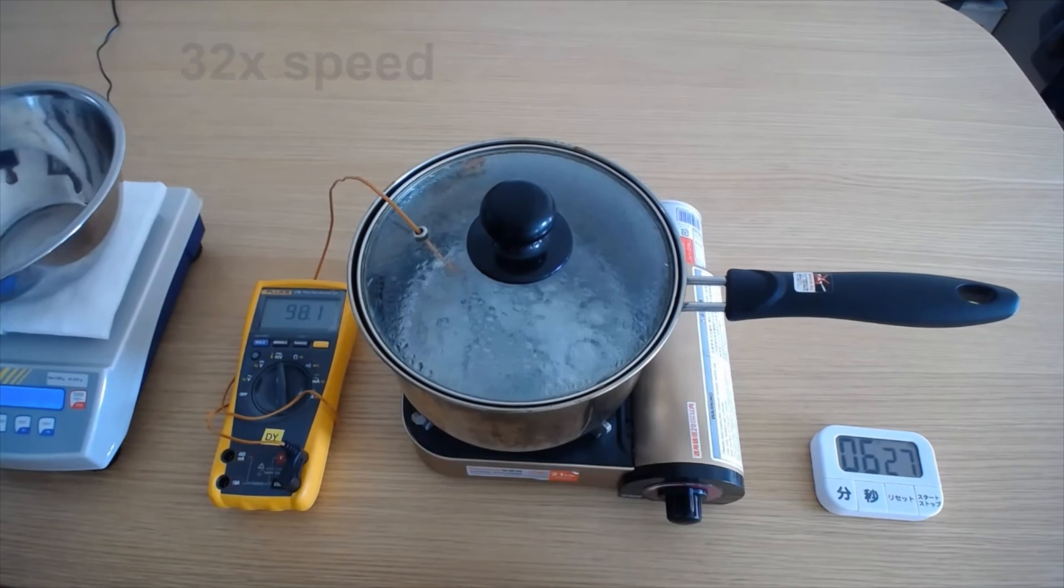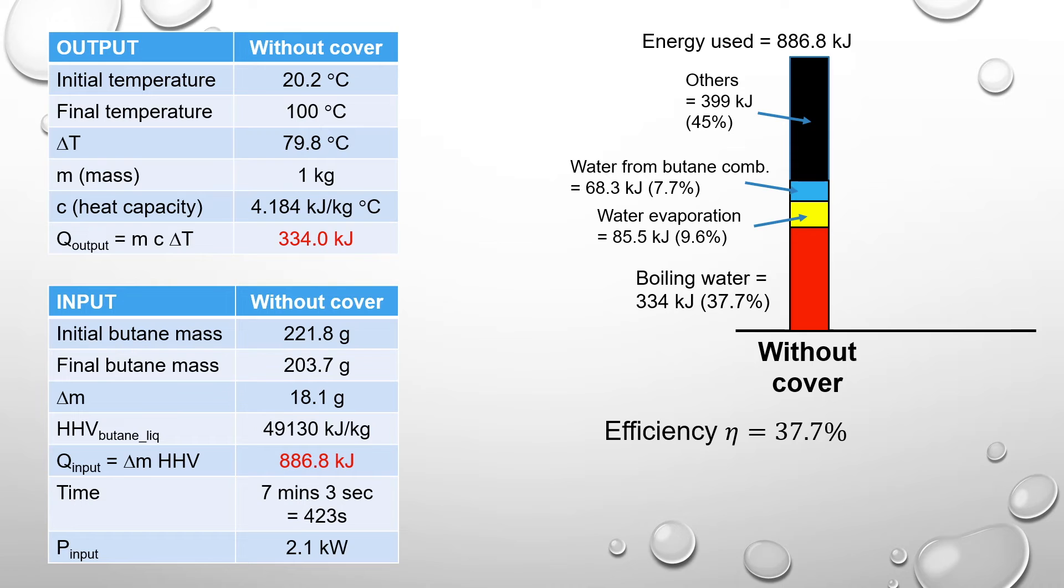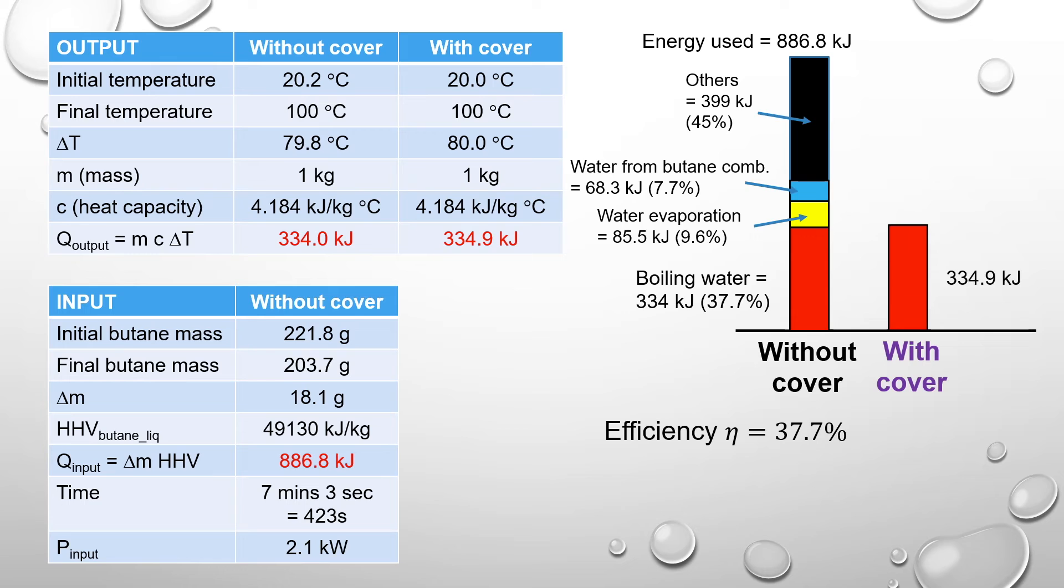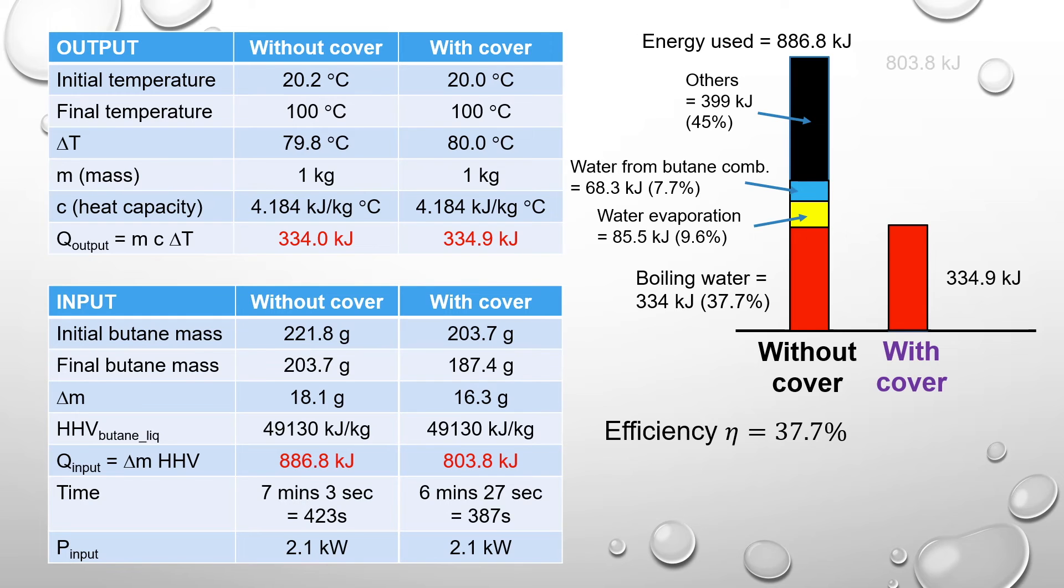We can see that the time taken to boil the water is slightly reduced to 6 minutes and 27 seconds. Now we can take a look at the numbers. The output energy is about the same, at about 334.9 kJ, as we are still boiling the same amount of water. Though the input energy is now reduced to 803.8 kJ with the shortened time. So the energy efficiency is increased to 41.7%.